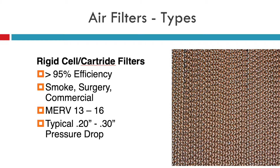Moving up to rigid cell or cartridge filters — like the cells inside an AccuClean that American Standard makes — they typically have some sort of pre-filter and then the rigid cell or cartridge filter. They tend to have really high efficiency and fall into the MERV 13 to 16 range. These are used in surgical rooms and commercial applications and do a great job removing smoke and odors. They have a slightly higher pressure drop, typically 0.2 to 0.3, and definitely have to be designed around. Putting this into a duct system without planning will likely change the volume of air and impact comfort.